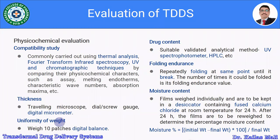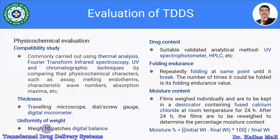Uniformity of weight is an important parameter — variation in weight leads to variation in drug content, which may vary the dose. It is measured using a digital balance; the weight of each patch is measured individually and the standard deviation is determined to give an idea about the uniformity of weight.